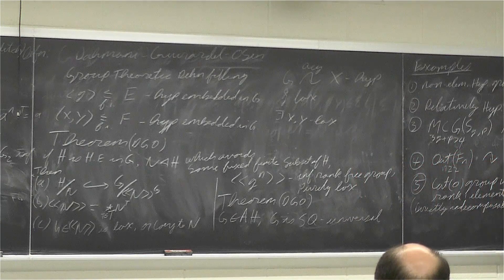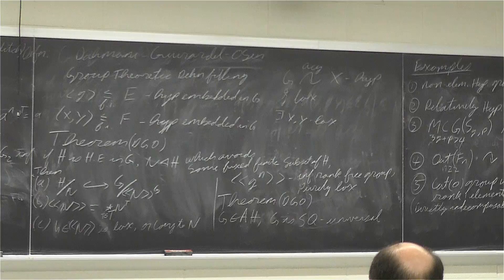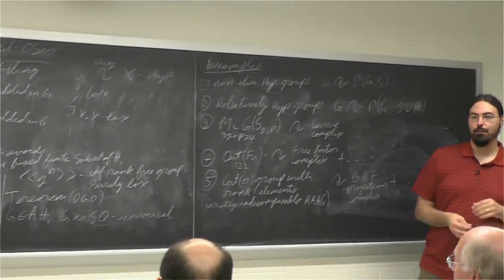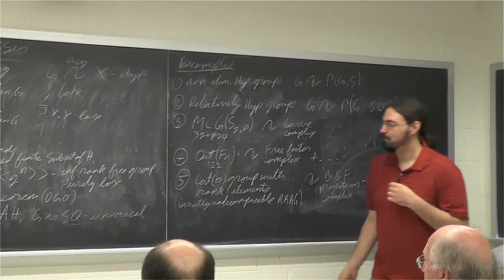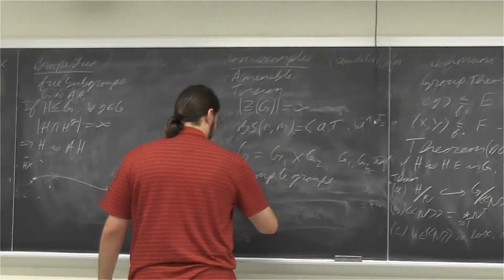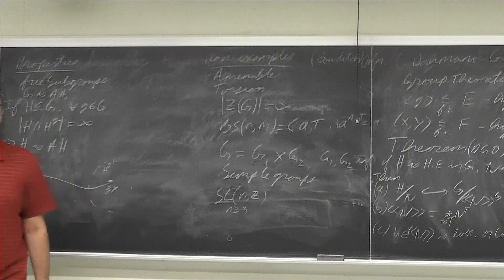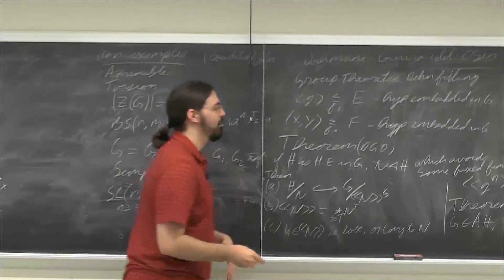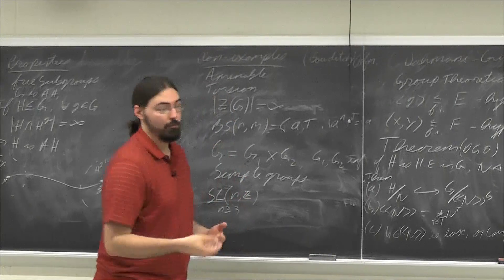In particular, every countable group embeds into some quotient of G. This is a kind of algebraic version of largeness — these groups are very big with lots and lots of quotients. From this you can derive that G has uncountably many normal subgroups, since there are only countably many finitely generated subgroups of any finitely generated group. This also allows one to add SL_n(Z) for n at least 3 to the non-examples: the Margulis normal subgroup theorem says these have only countably many normal subgroups.